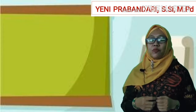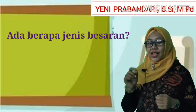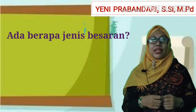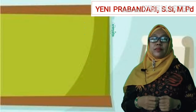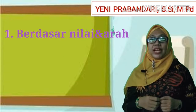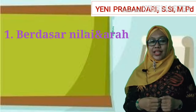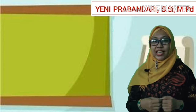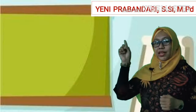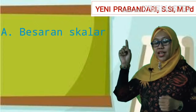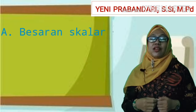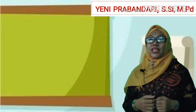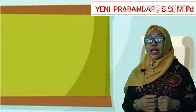Lalu, ada berapa jenis besaran? Ada dua penggolongan besaran. Yang pertama yaitu berdasarkan nilai dan arahnya. Ada dua jenis besaran berdasarkan nilai dan arahnya, yaitu yang pertama adalah besaran skalar. Besaran skalar itu adalah besaran yang hanya memiliki nilai atau angka tanpa memiliki arah.